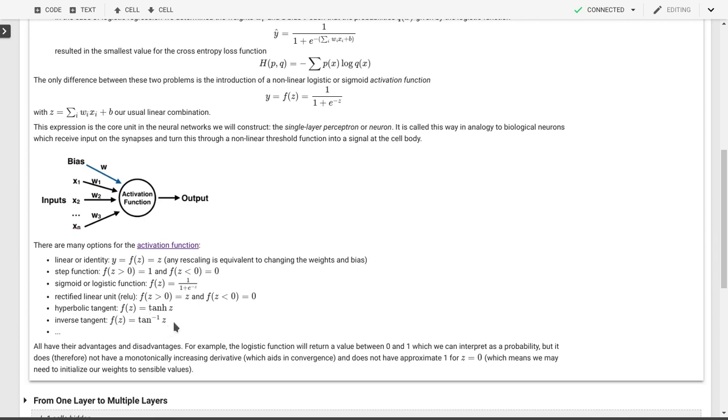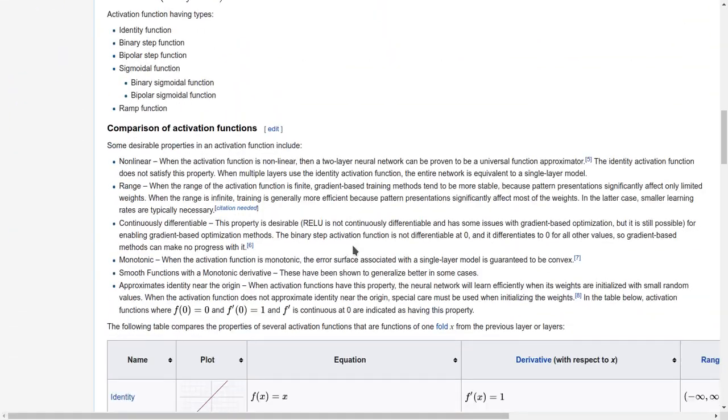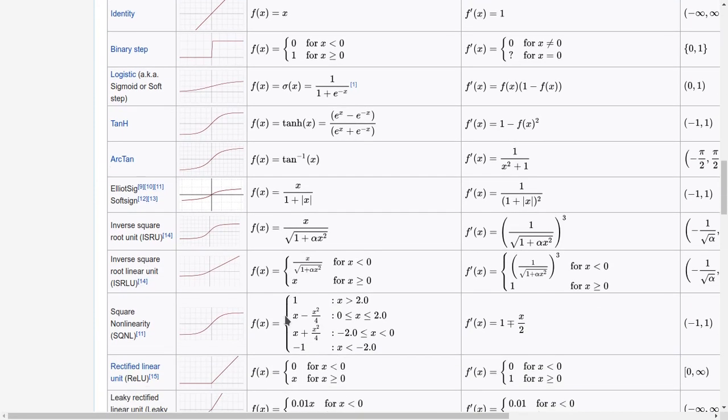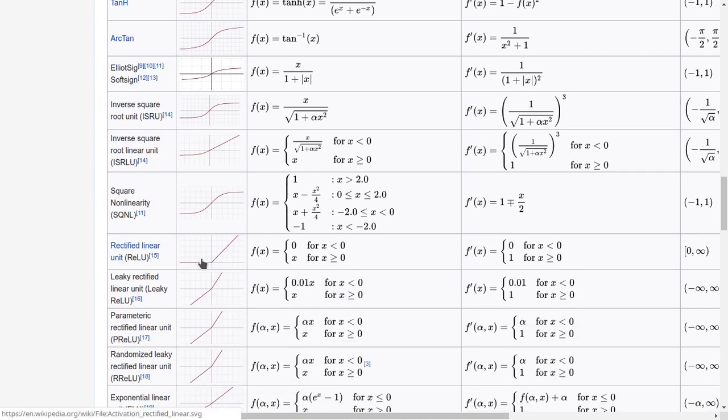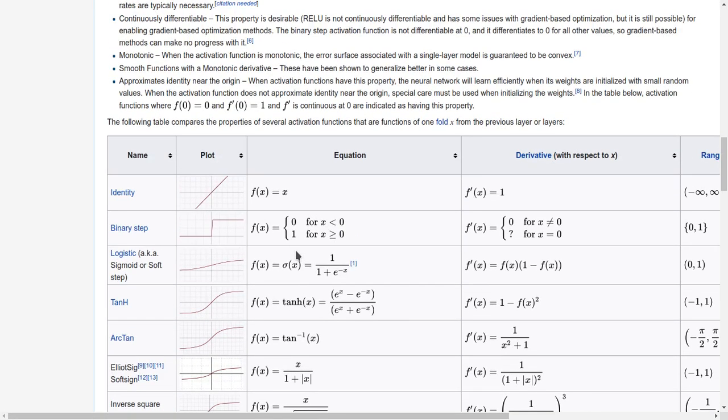All of those functions have their advantages and disadvantages. We can look at the expressions in the activation function page on Wikipedia. You can see here is our identity, we have a regular step or logistic function, hyperbolic tangent, arctangent, and a bunch of others. ReLU is probably here. So all of these have their disadvantages and advantages.